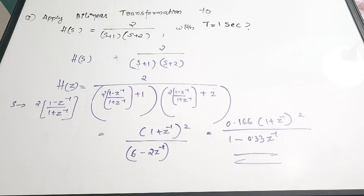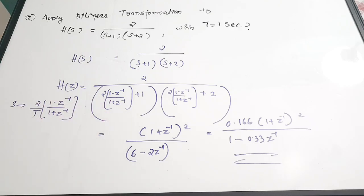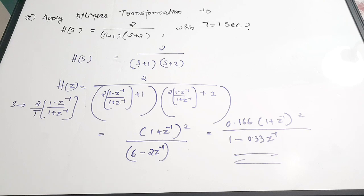So the key concept in bilinear transformation is that you are converting s to (2/T) × (1 − z⁻¹)/(1 + z⁻¹) — that is the most important part to know. Wherever you see s, replace it with this term. The T value will be given in the question; if not, the most common default is T = 1. Bilinear transformation is a way of converting an analog filter transfer function to a digital filter transfer function — from H(s) to H(z).